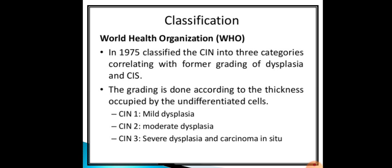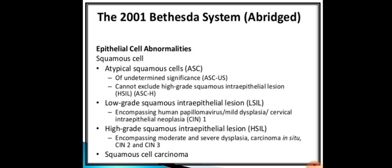The WHO classification from 1975 categorizes CIN into three grades correlating with the former grading of dysplasia and carcinoma in situ. Grading is done according to the thickness occupied by undifferentiated cells: CIN 1 is mild dysplasia, CIN 2 is moderate dysplasia, and CIN 3 is severe dysplasia and carcinoma in situ.